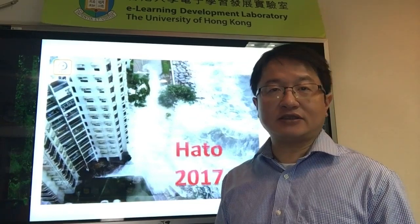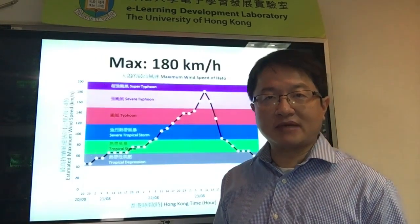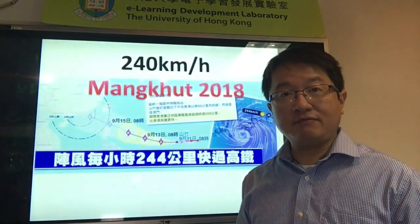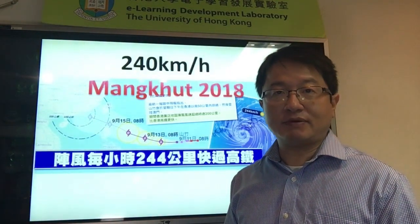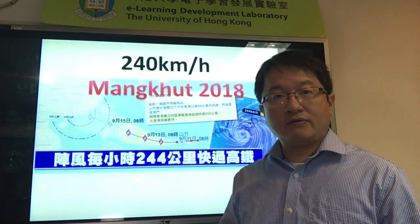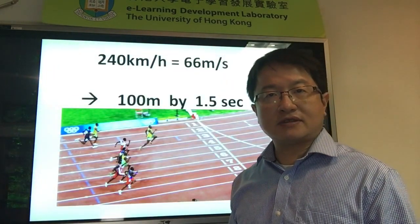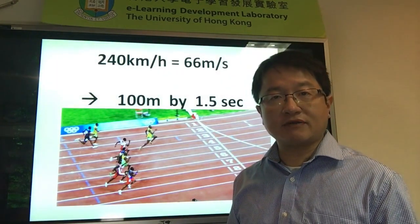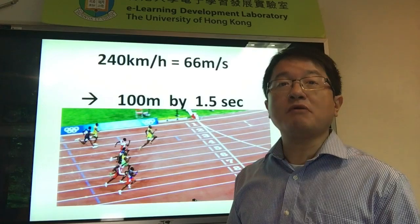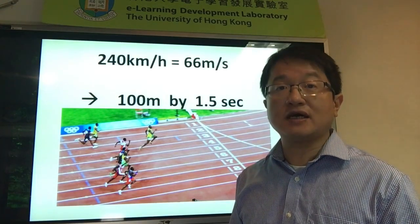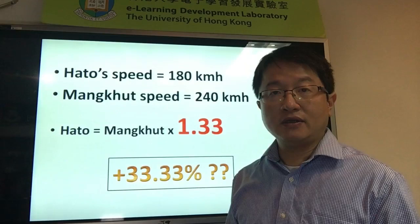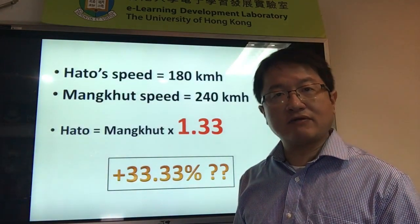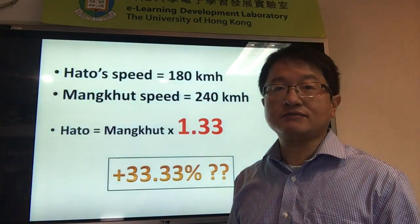Last year, there was a typhoon attack on Hong Kong and the maximum wind speed was 180 km per hour. At this time, the typhoon's maximum wind speed is 240 km per hour. In other words, if we convert it into SI units, it's about 66 meters per second. So it would take only 1.5 seconds to finish a 100-meter dash. The speed of this typhoon is around 1.33 times faster than the last one.